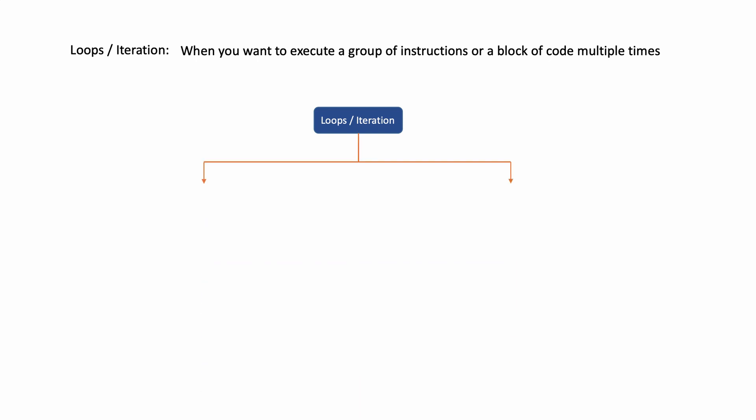In some cases you might want to repeat something a specific number of times — you decide: I want to repeat one or two lines of code two times, three times, five times. That's called a controlled loop, or controlled iteration. Other times you want to loop something and you don't know how many times — it's based on a condition. That's called a conditional iteration.